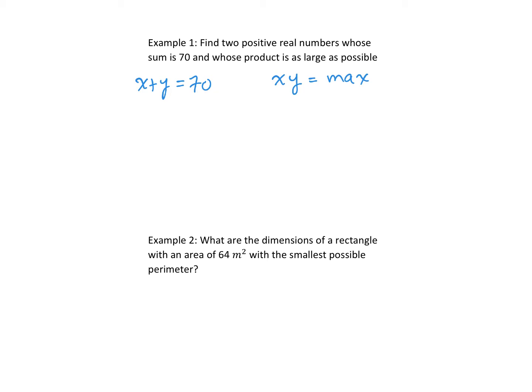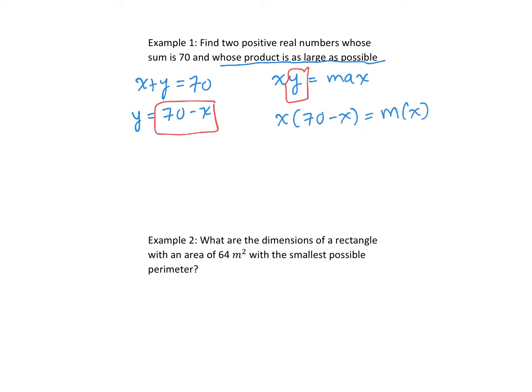We want to create an equation with only one variable so we can solve the function. The product is what we want to maximize, so I'm going to isolate y from the sum equation and substitute it into the product equation. That gives us x times (70 minus x), which I'll call M(x). Let's expand.